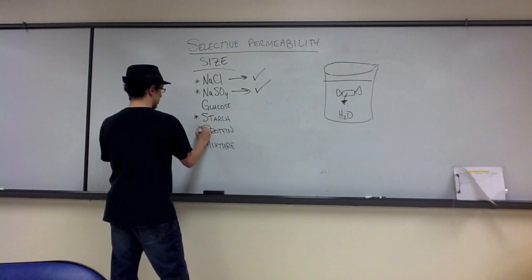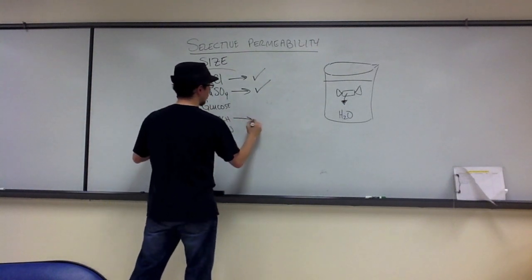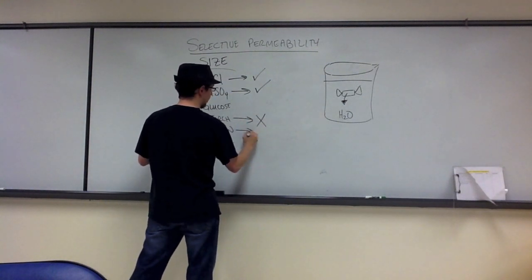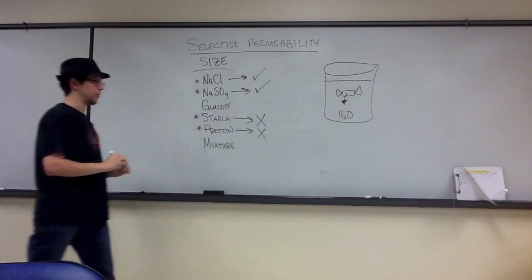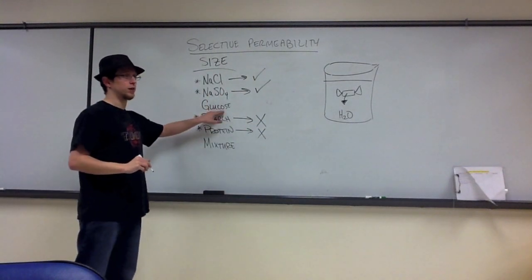Starch and protein are far too large, so we don't expect them to permeate. Glucose is the tricky one.